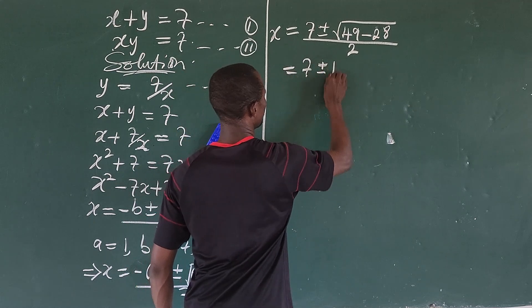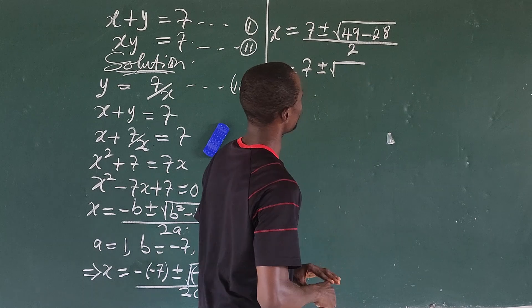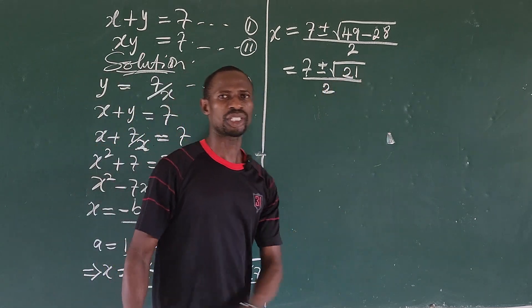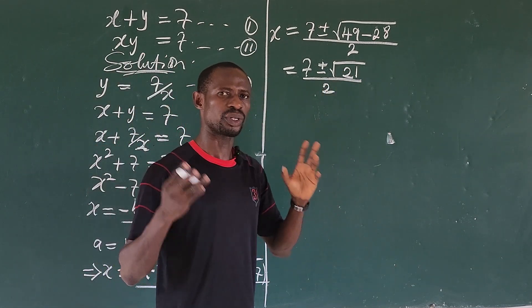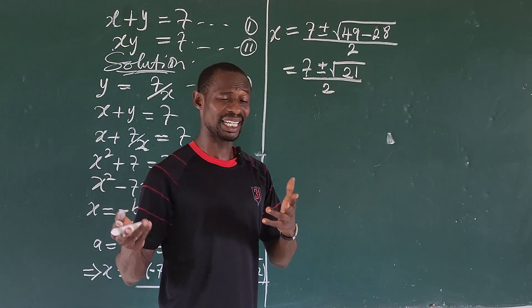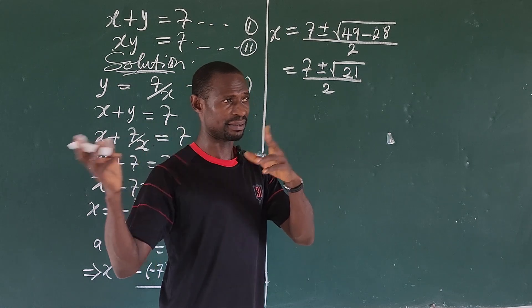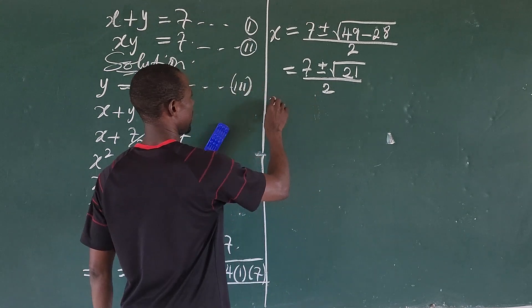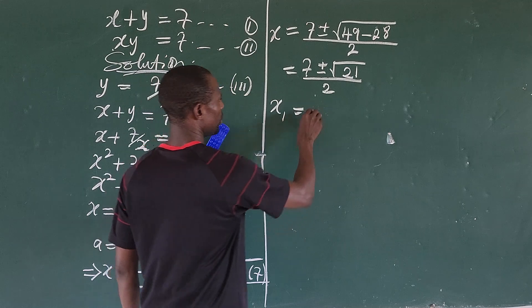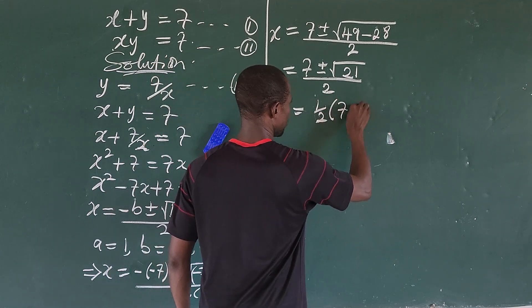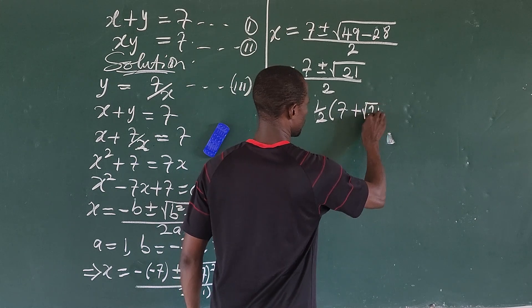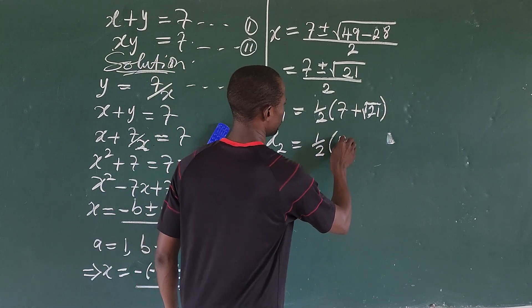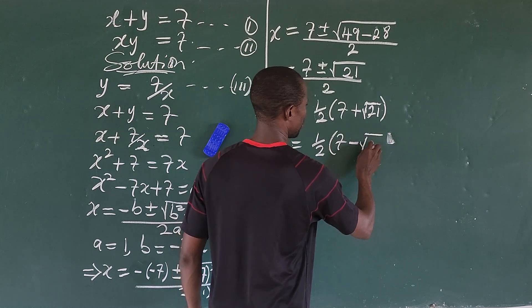Simplifying inside the square root: 49 − 28 = 21, so x = (7 ± √21) / 2. We cannot simplify √21 further. This gives us two solutions: x₁ = (7 + √21) / 2 and x₂ = (7 − √21) / 2.